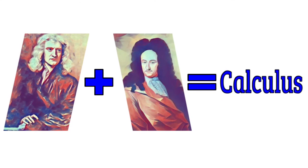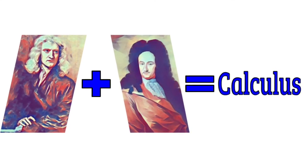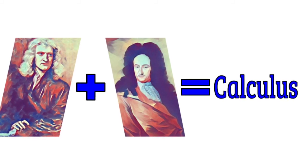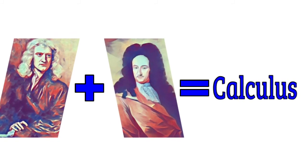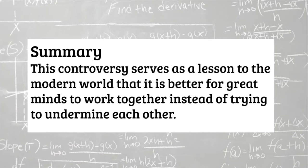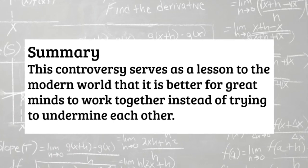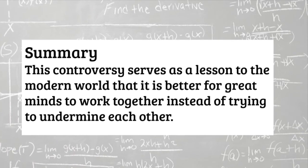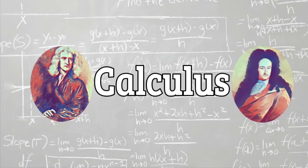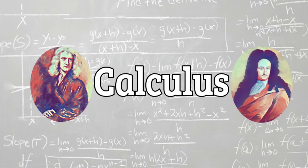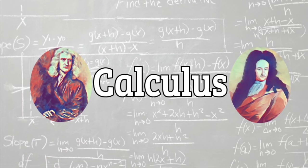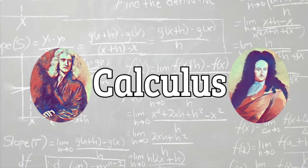Eventually, the mathematical community came to realize that Newton and Leibniz had made their discoveries independently, but this was not until years after Leibniz's death. As a piece of history, this controversy serves as a lesson to the modern world that it is better for great minds to work together instead of trying to undermine each other. The public may never know who the real first inventor of calculus was, but both Newton and Leibniz were truly innovators in the field of mathematics.